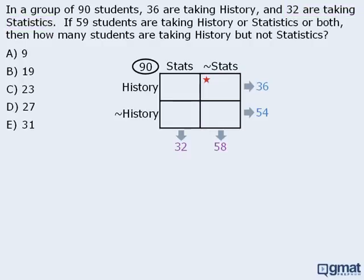We have one last piece of information: 59 students are taking history or statistics or both. Since those three boxes are reserved for students taking history, statistics, or both, and there is a total of 59 students in those three boxes, the remaining 31 students must be in the neither box. This makes sense — if a student is not included among those taking history or statistics or both, then that student must be taking neither history nor statistics. So there must be 31 students in that box.